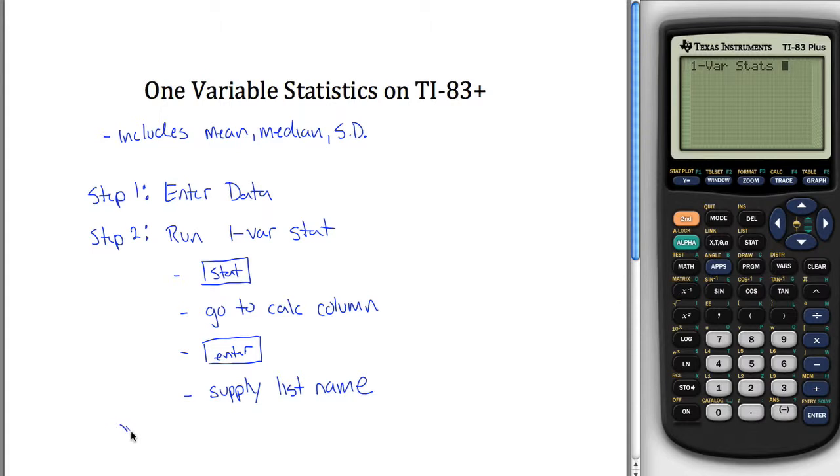What I'm saying there is it will say one variable stats, but we have to tell it where our data is. The data we wanted to use was in list three. So if you look above the three key here, there's a little L3 in orange. So to get the orange menu, you hit second and then three. So now we got one variable stats L3, and now I can hit enter again.